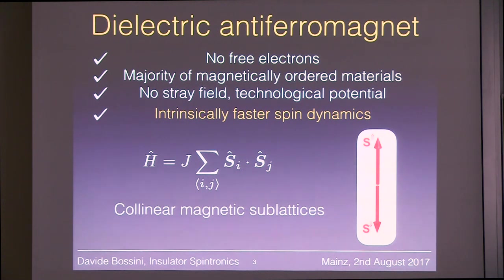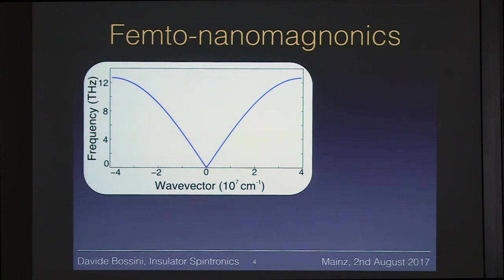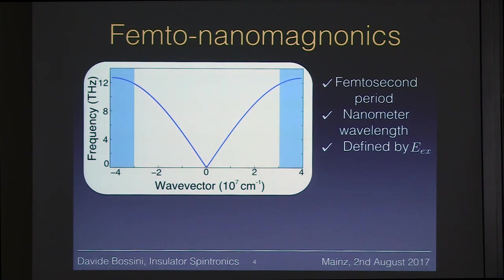If you have such a magnetic material and you want to think about the possible excited states, you can measure or calculate the magnon dispersions. At least 95% of experiments employing light on magnets have addressed K=0 magnons — magnons at the center of the Brillouin zone — simply because the wave vector of light is zero. However, our goal is femto, nano, and spin, so it is natural to look away from the center and toward the edges of the Brillouin zone, where magnons have femtosecond periods and nanometer wavelengths. These magnons are defined by the exchange interaction, so some people call them exchange magnons, but I prefer the term femto-nanomagnons.